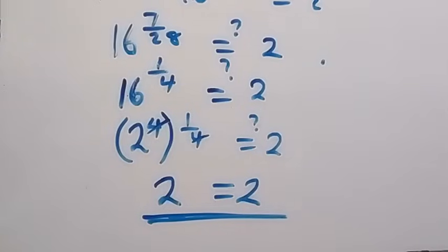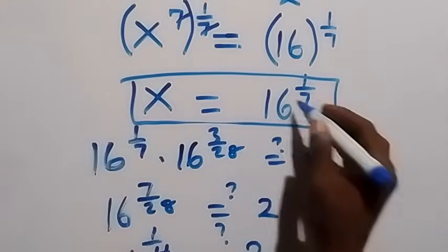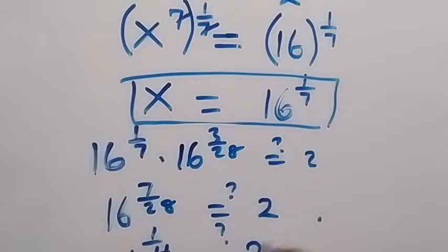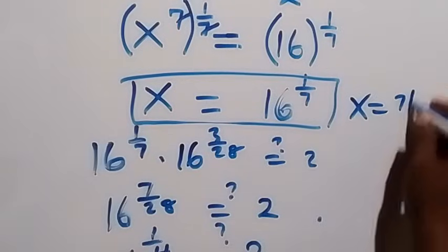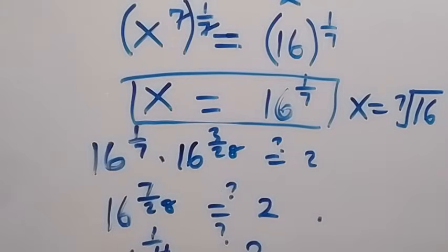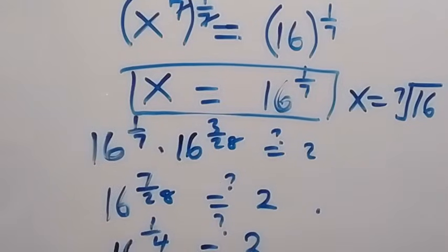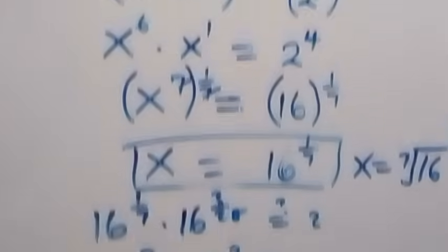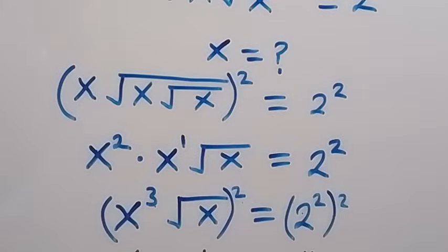From here we conclude that x equals 16 raised to power 1 over 7, which we can also write as the 7th root of 16. Thank you for watching. Please give a thumbs up and subscribe to this channel for more exciting videos. Also put in the comment section if you have another way of solving this. See you next class, bye for now.